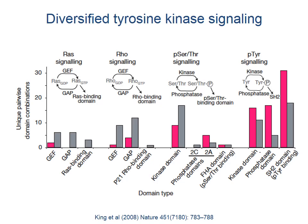In the Monosiga brevicollis genome there are more novel and unique domain combinations involving kinase groups. In particular, there is a greater abundance of phosphotyrosine kinase signaling domains, and most of their observed pairwise domain combinations are distinct from those observed in metazoans. This suggests that the choanoflagellate possesses complex kinase signaling pathways.